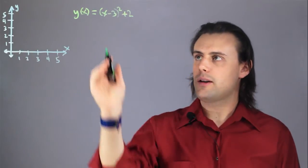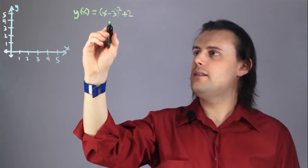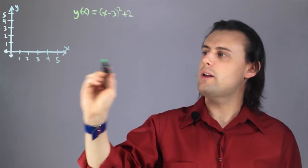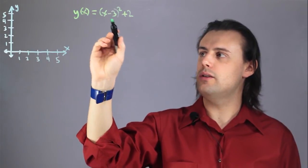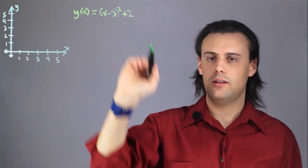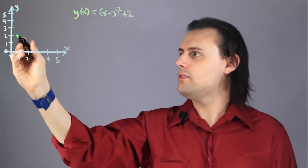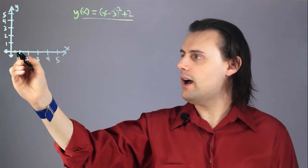I can tell from the standard form that the vertex is going to be located 3 points away from the origin to the right in the positive x direction and 2 points in the positive y direction. So just from looking at this form alone, I have 1, 2, 3...